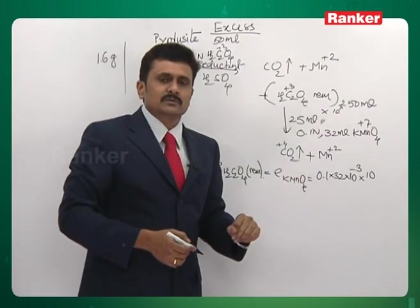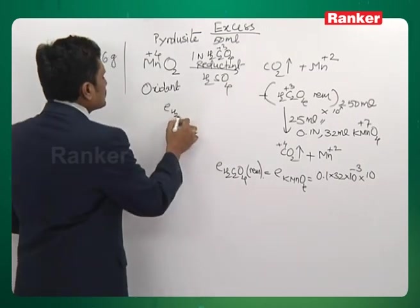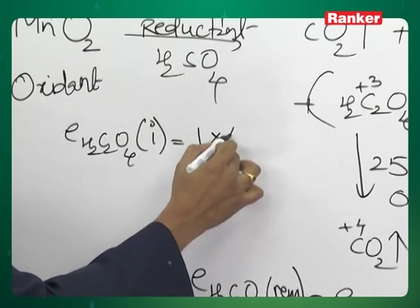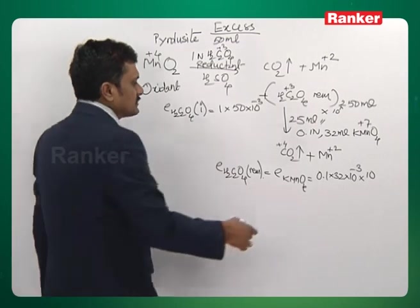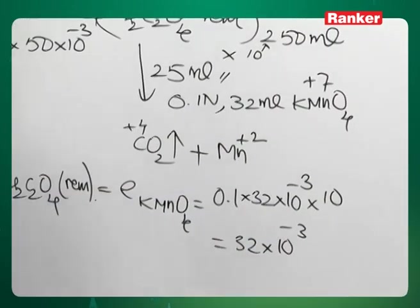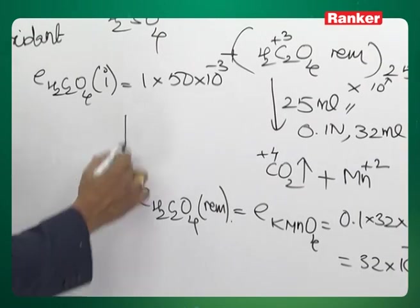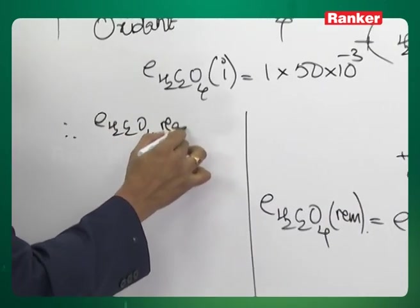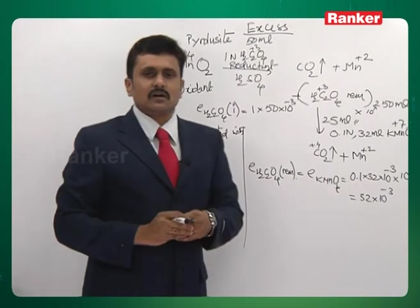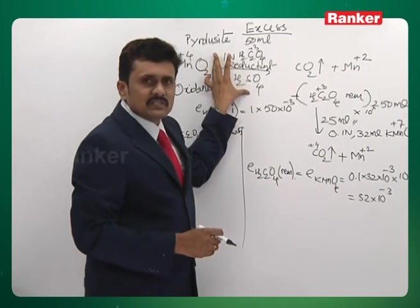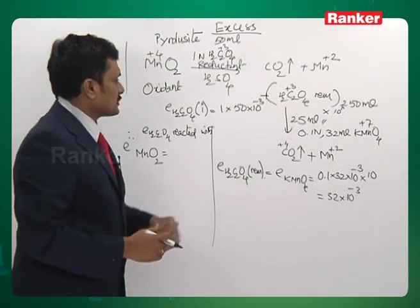These are the equivalences of oxalic acid remaining after the first reaction. The equivalences initially taken are 1 × 50 × 10⁻³. We can see that 32 × 10⁻³ are the equivalences of oxalic acid remaining. The equivalences initially taken minus the remaining gives the oxalic acid equivalents that reacted with pyrolusite. By the law of chemical equivalence, the equivalences of oxalic acid that reacted equal the equivalences of MnO₂.